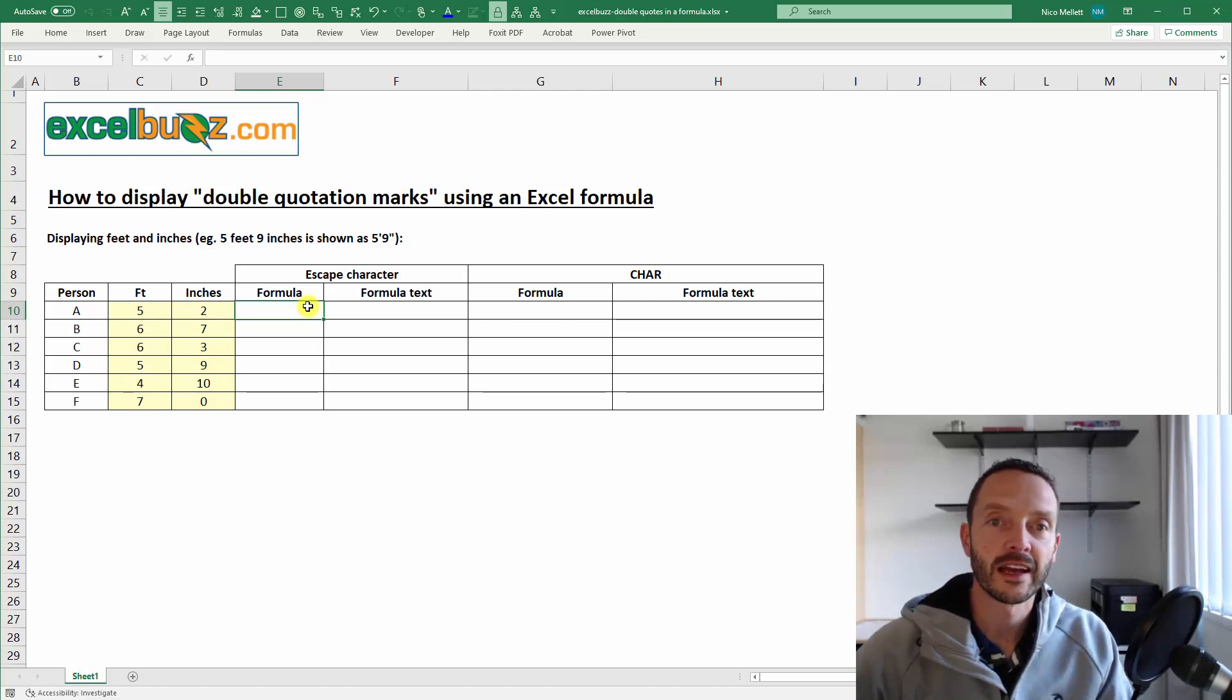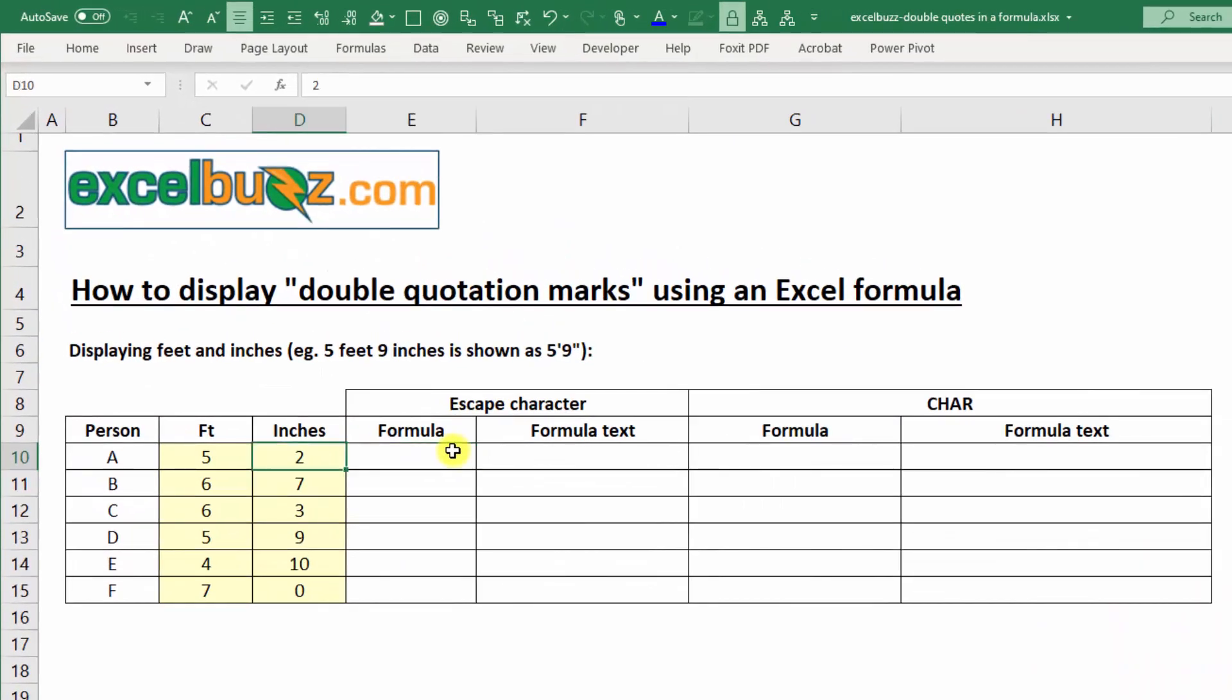In this video, we'll learn how to display a double quotation mark using an Excel formula. For each person in this table, we know their height. We have the feet in column C and the inches in column D.